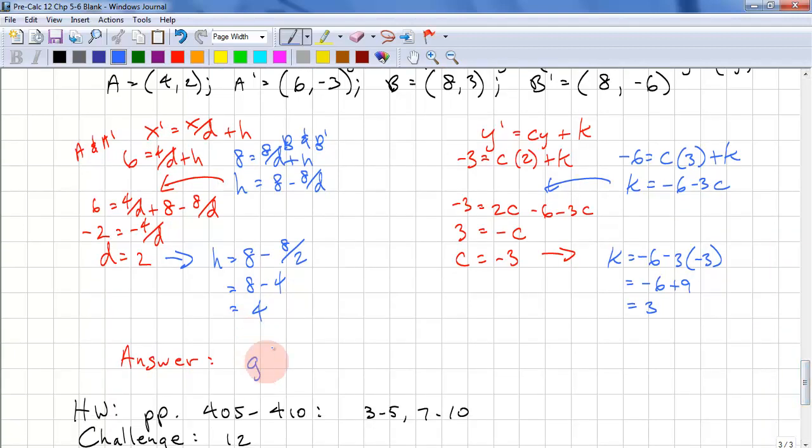Therefore, g(x) equals negative 3 times f(2(x minus 4)) plus 3. Remember, the general form is c times f(d(x minus h)) plus k. And that completes this lesson.